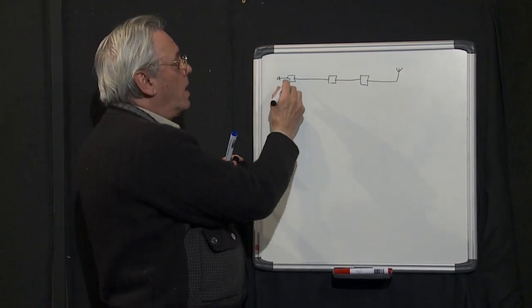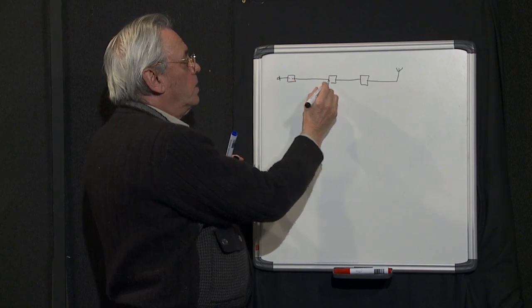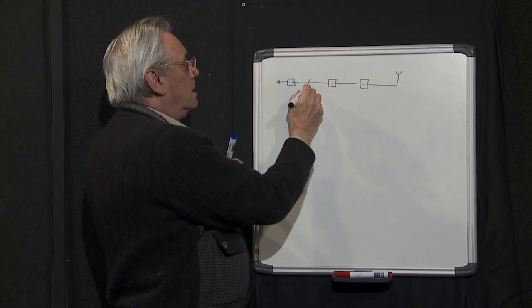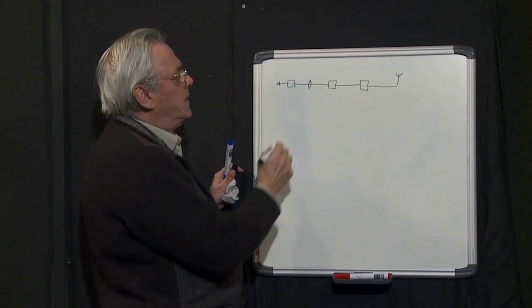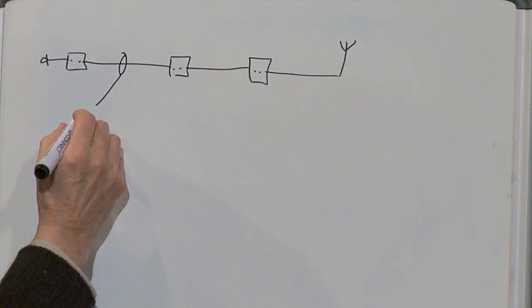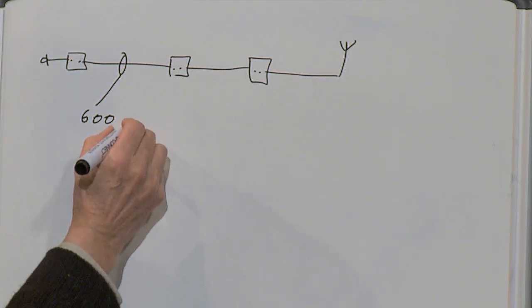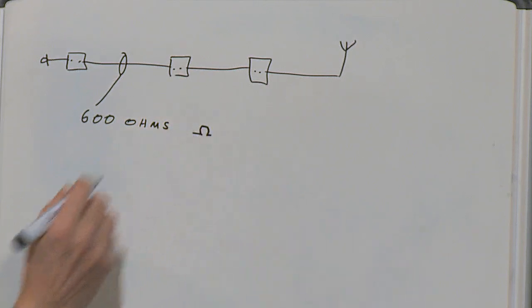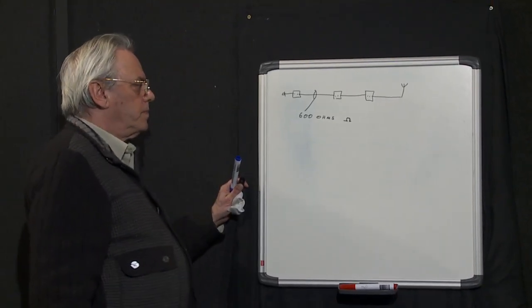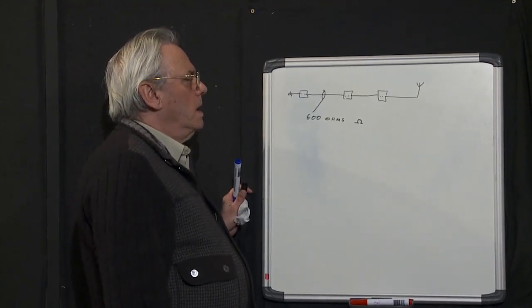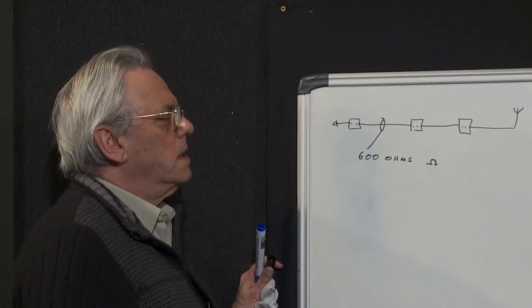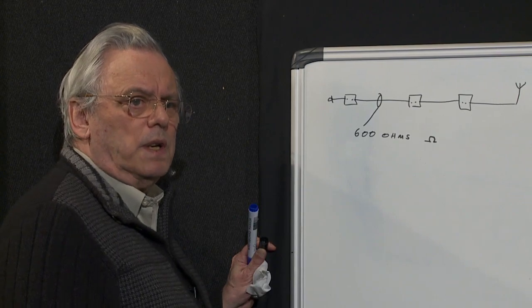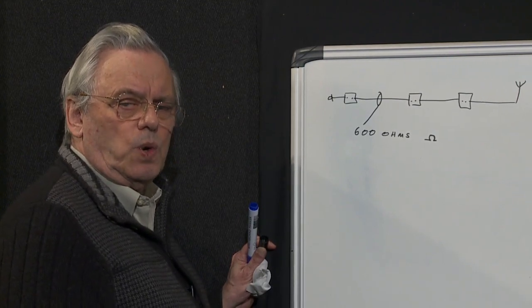And as I mentioned, these were all coupled by transformers. Let's take a closer look at what happens in here. The first is that the impedance of that is 600 ohms. Why 600 ohms? Well, the reason is that is very close to the natural impedance of twisted screened audio cable.